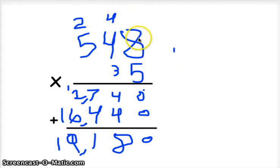First you start in the 1st place. 8 times 5 equals 40. So you write the 0 down, and then carry the 4. In the 10th place.